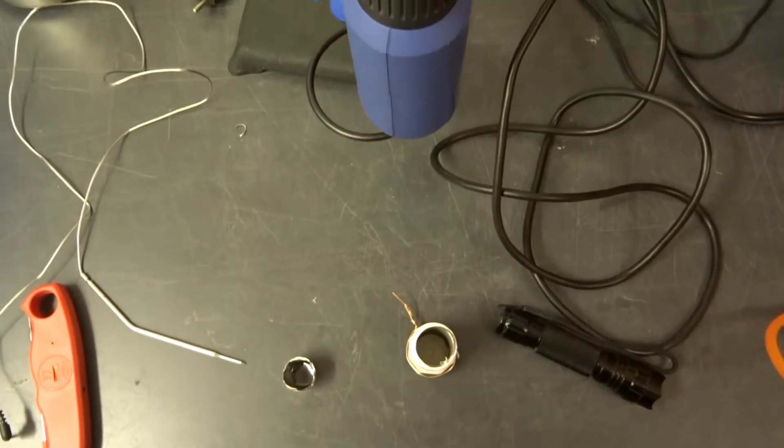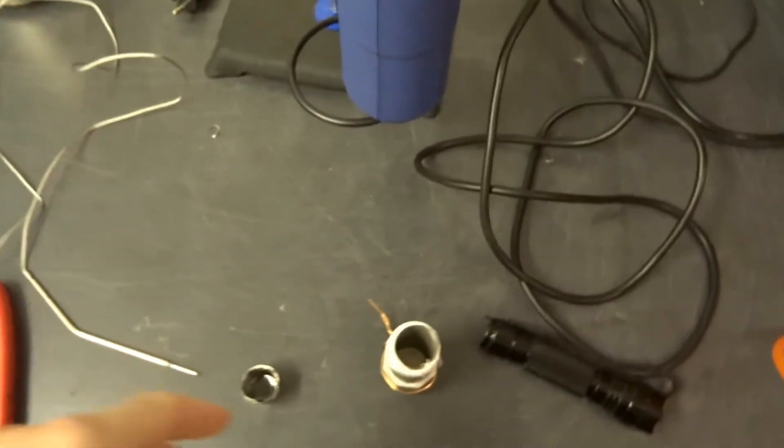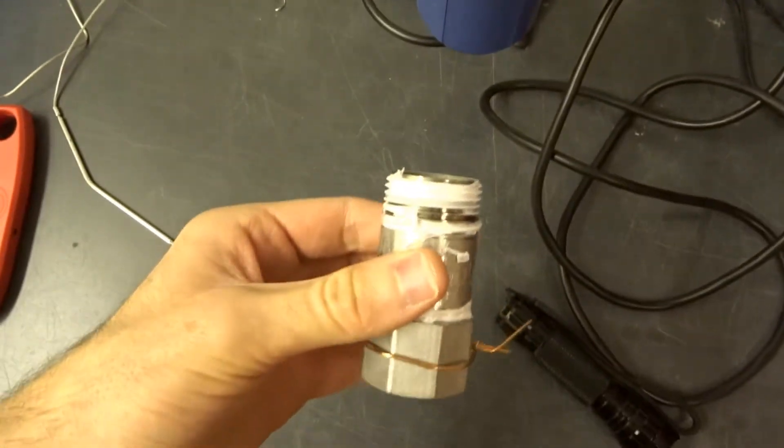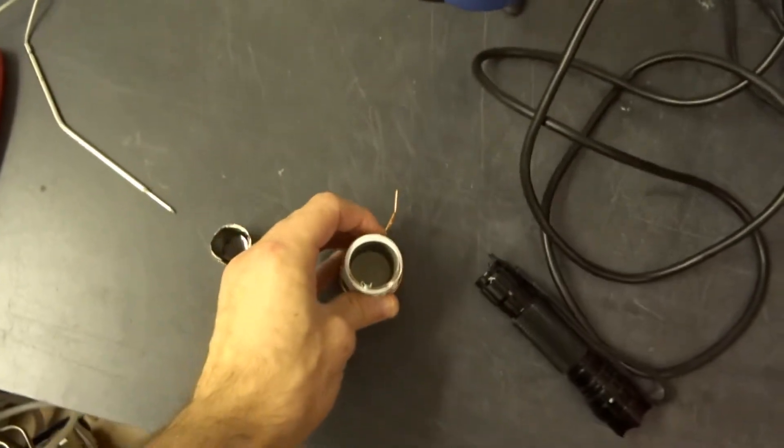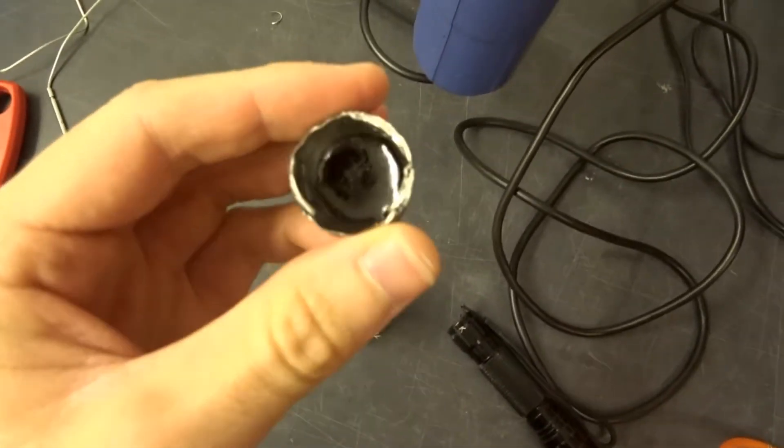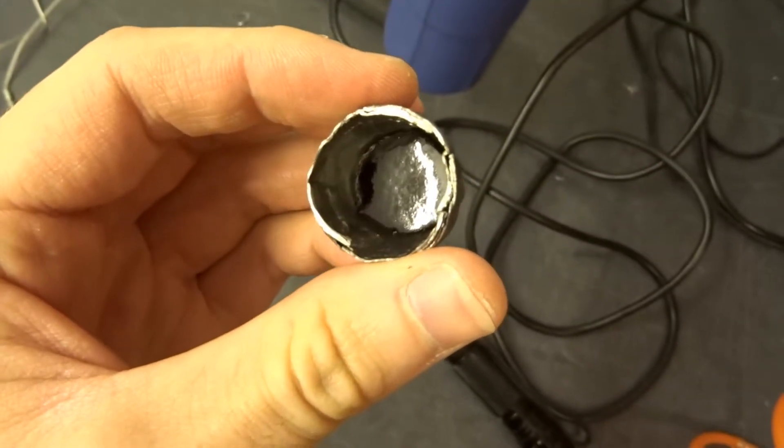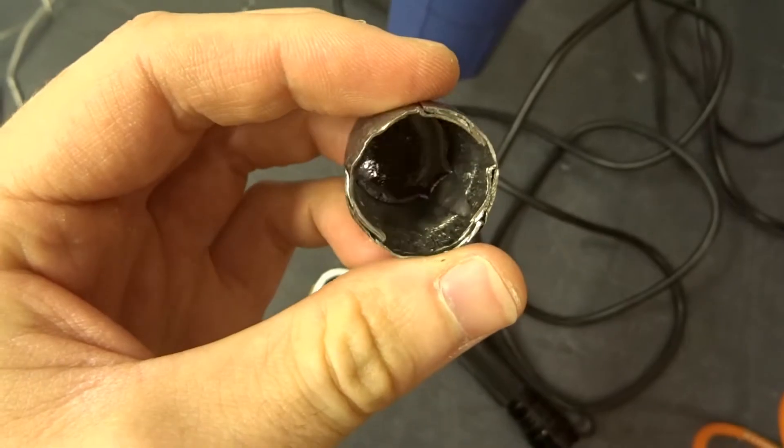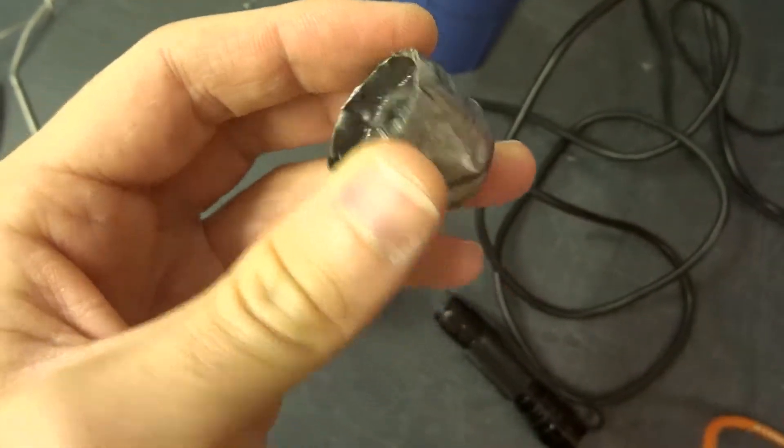So I heated it up a second time. Let everything cool down, depressurized and unloaded the batch and look at that. Not a single bubble. This is some great bakelite.